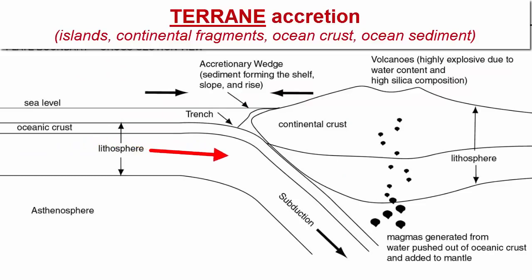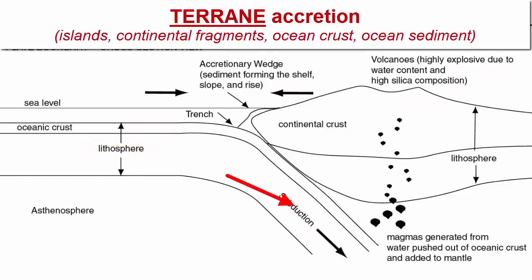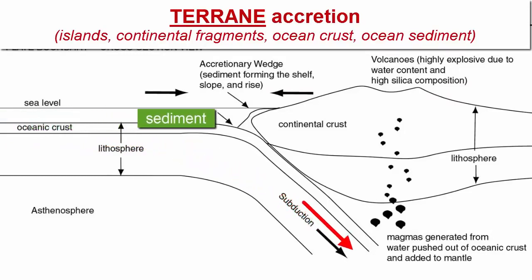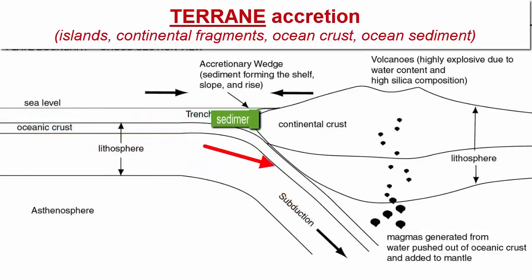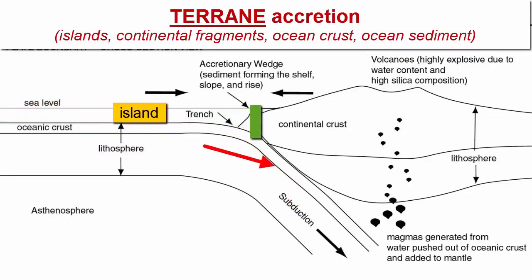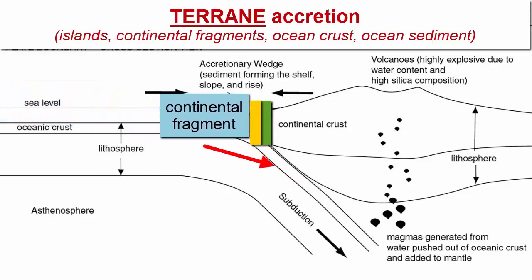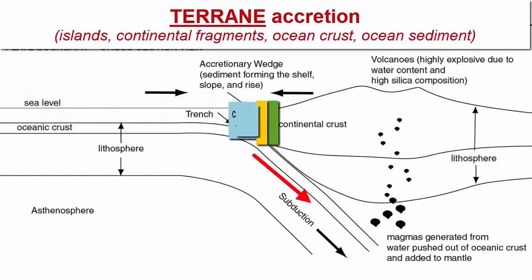Even as ocean floor still exists and subducts alongside a continent, accretion and continental growth is happening. Islands, continental fragments, sediment, and the crust that carries them can get scraped off and accreted to the edges of the continent. We call these accreted fragments terrains, and they are the basic building blocks of all continents.